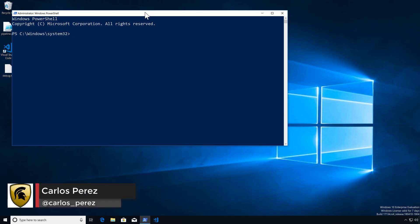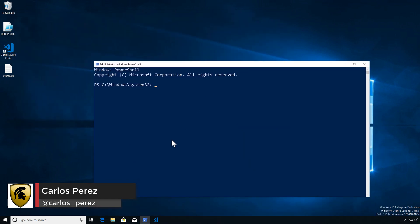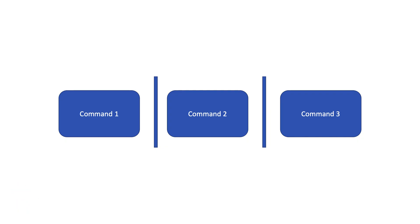Hello and welcome to the next video in the series. On this one we're going to be talking about the pipeline. The pipeline is a critical and powerful feature of great importance. What does it allow us to do? To send output from one command to another, so we can pipeline multiple commands where the output of one feeds the next in that pipeline or process.